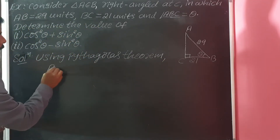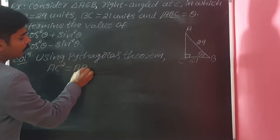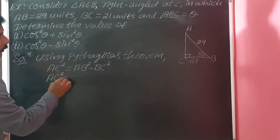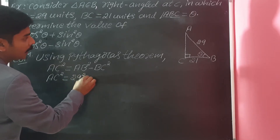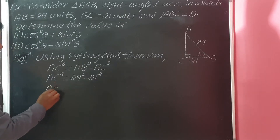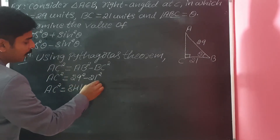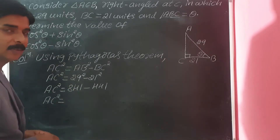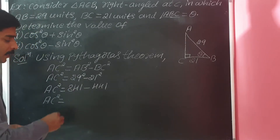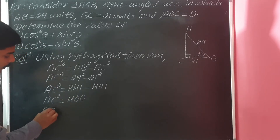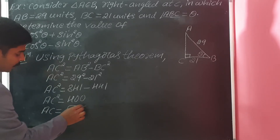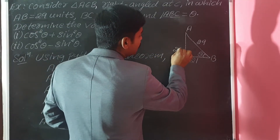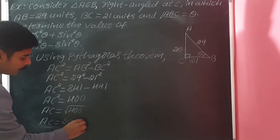Using the Pythagoras theorem, we can write: AC² = AB² − BC². So AC² = 29² − 21² = 841 − 441 = 400. Therefore, AC = √400 = 20. So AC is 20 units.